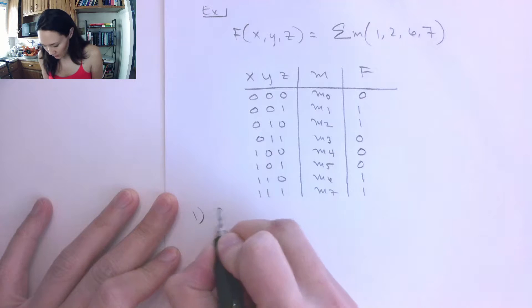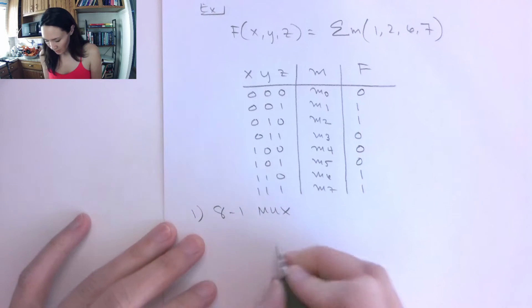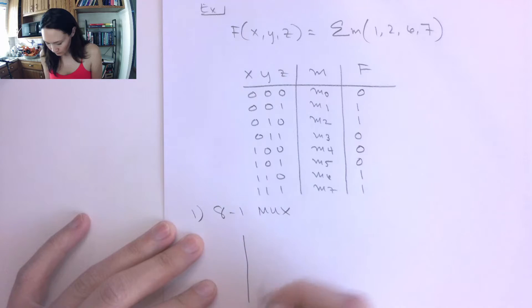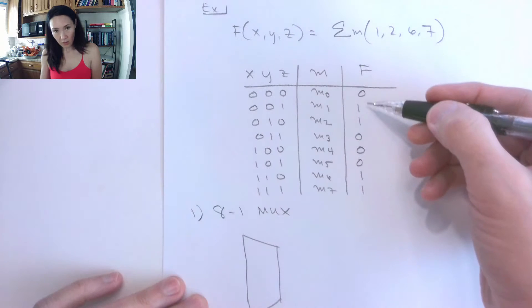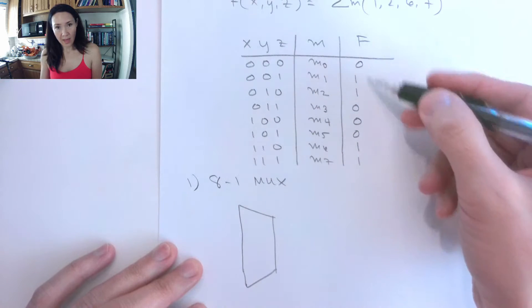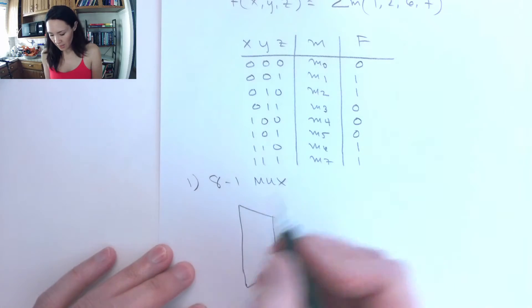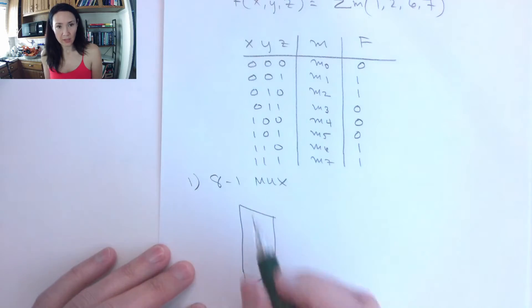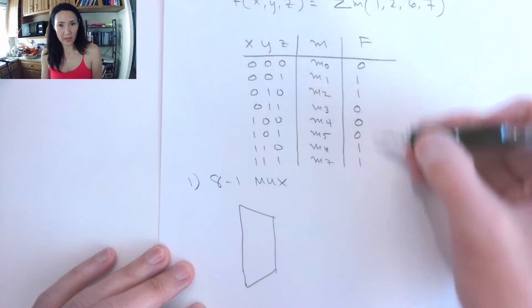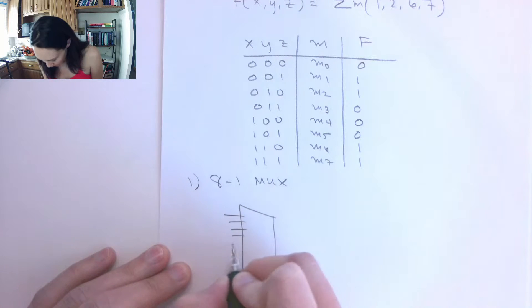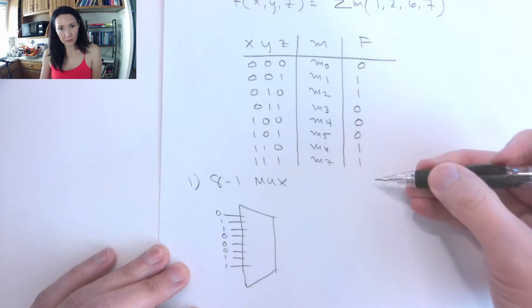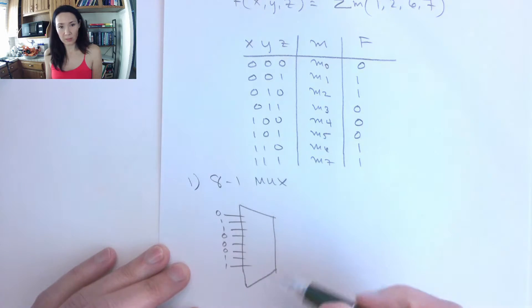So first, we can use an 8 to 1 multiplexer, and here's the idea. We are just going to kind of hard code these output states of f as inputs to our multiplexer. It's an 8 to 1, we have 8, we have 8 here, so this is going to be 1, 2, 3, 4, 5, 6, 7, 8. We're going to put in 0, 1, 1, 0, 0, 0, 1, 1. So we copy this from the truth table, goes as inputs to our multiplexer. These are our data line inputs.